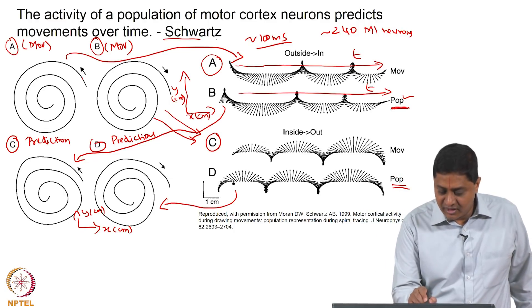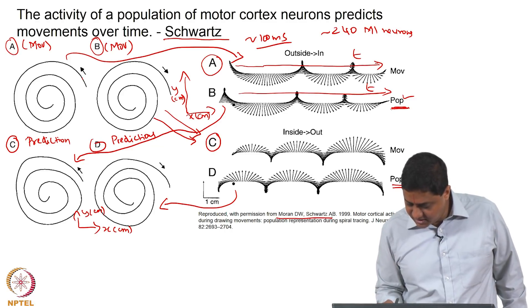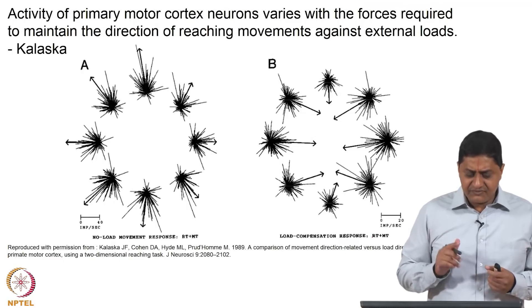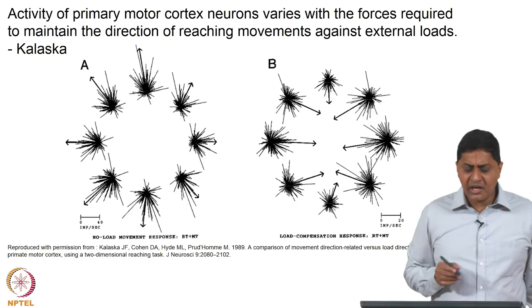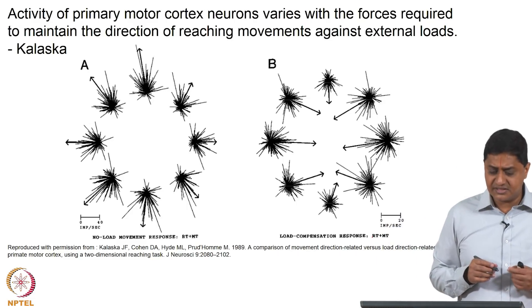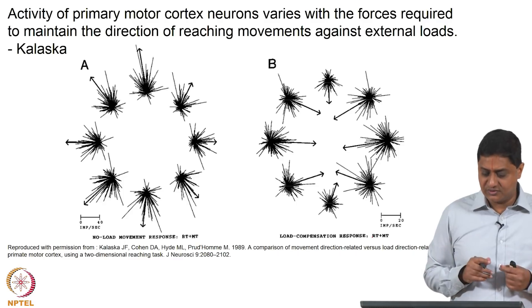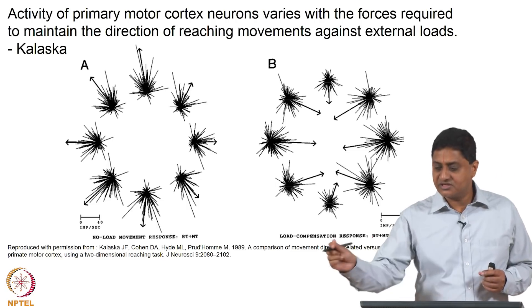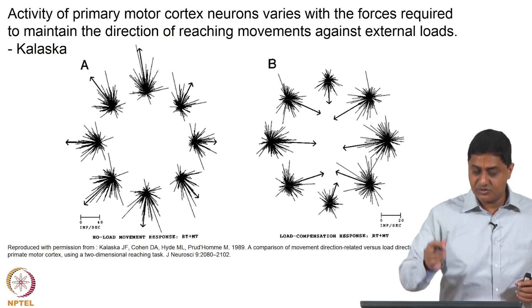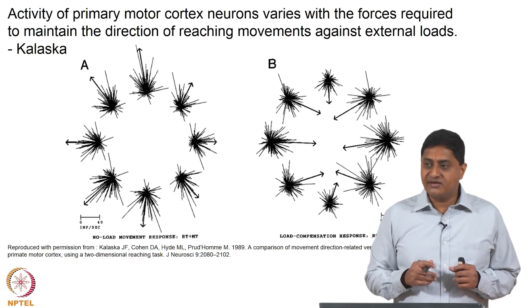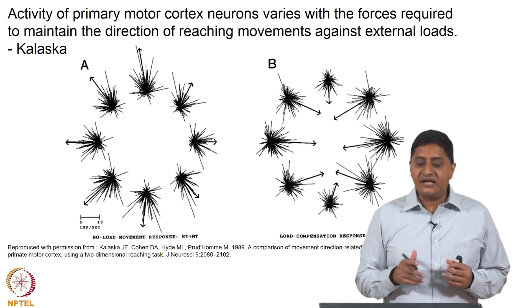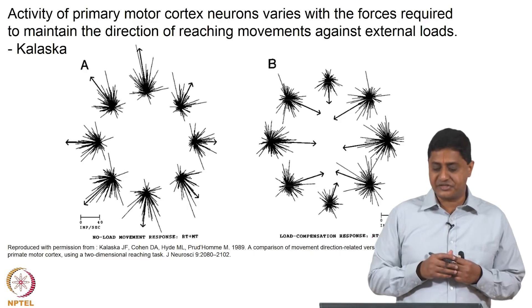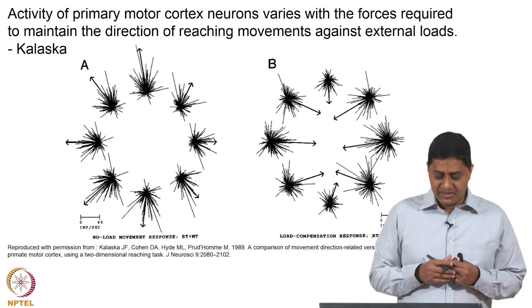This is the work of Moran and Schwartz, 1999. Next, we discuss what happens when the monkey is trying to move against external loads. In the Georgopoulos experiment there was no load — the monkey made movements to 8 directions. Suppose an external load either assists or opposes the movement in various directions — what could happen?